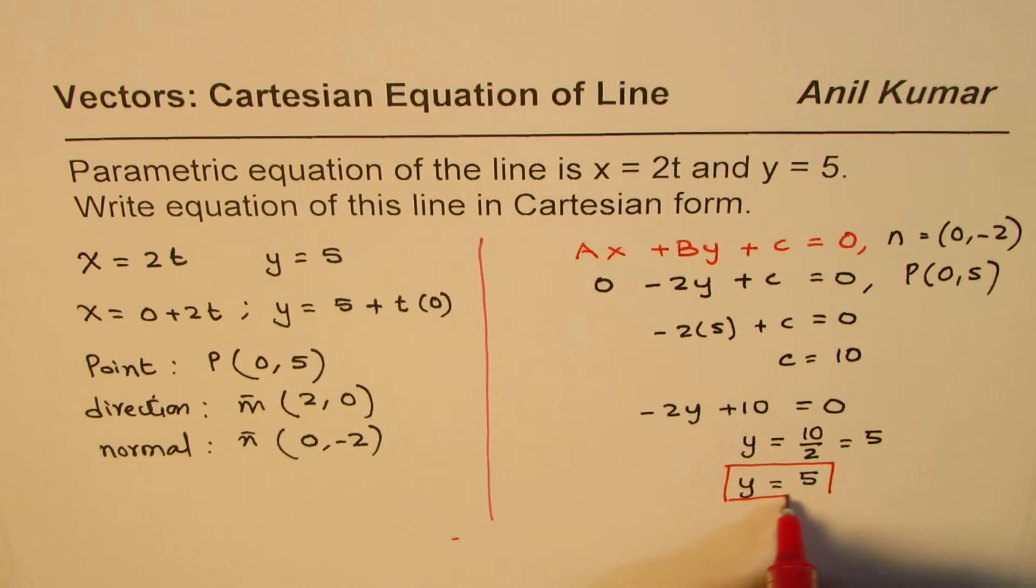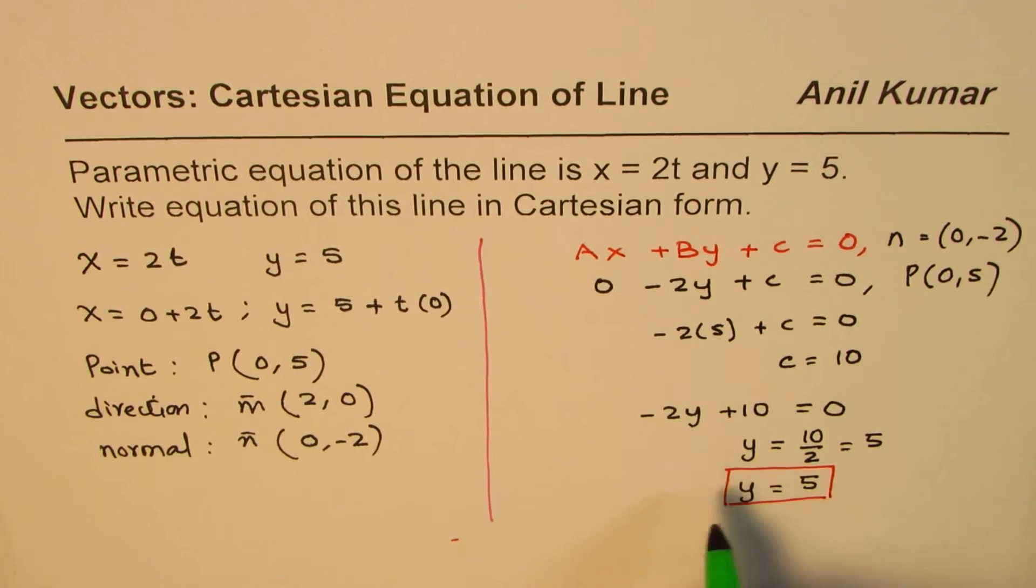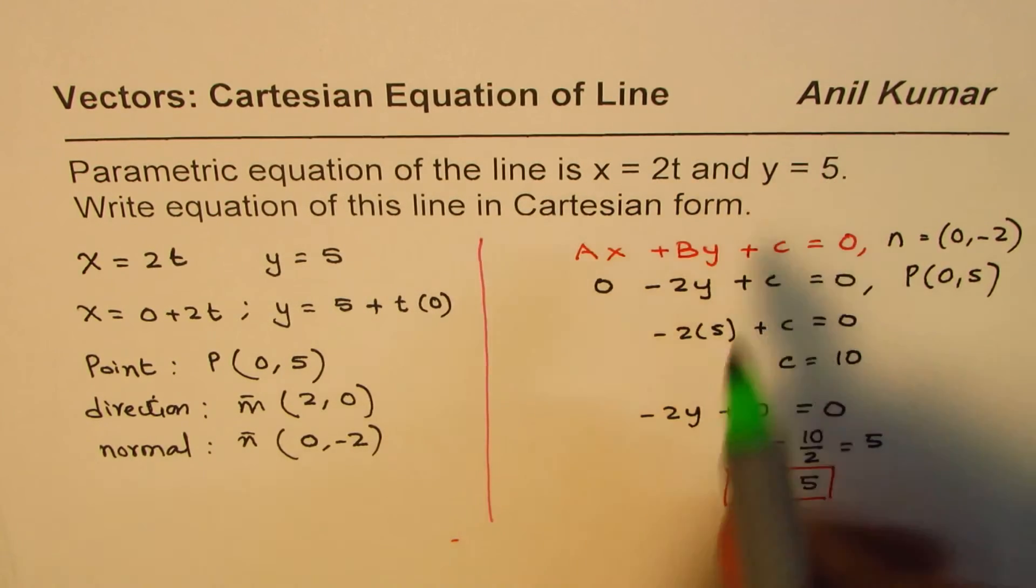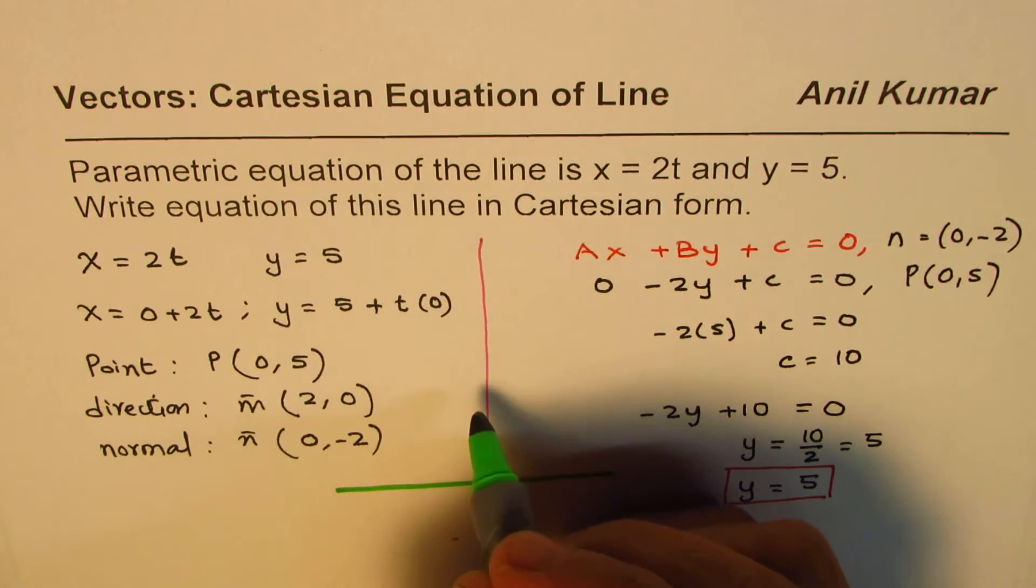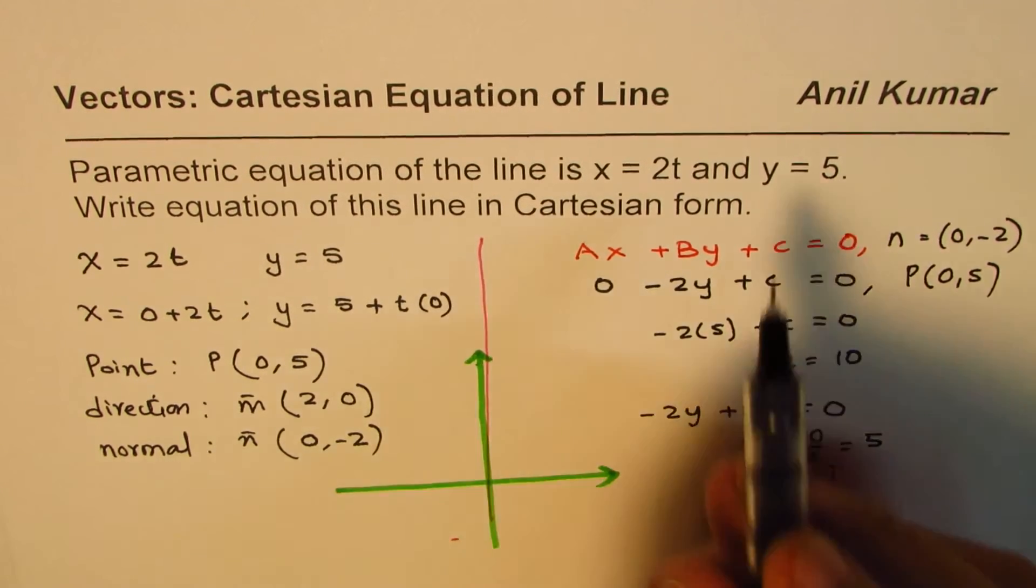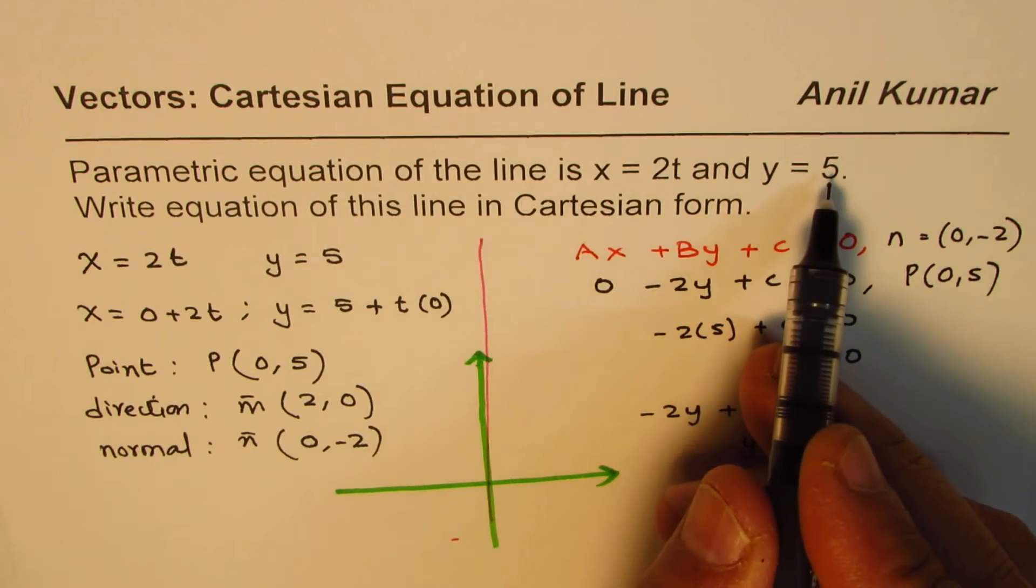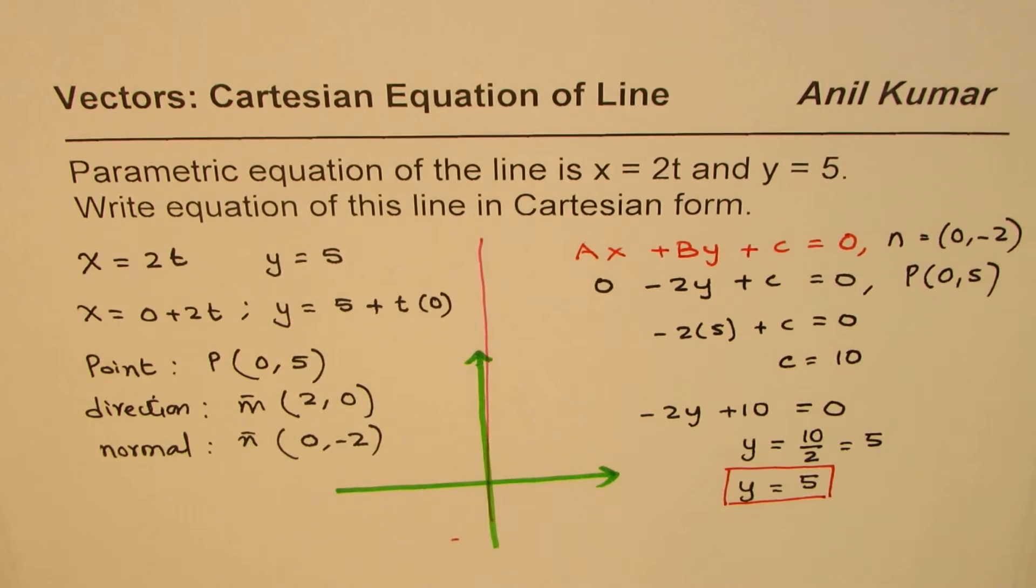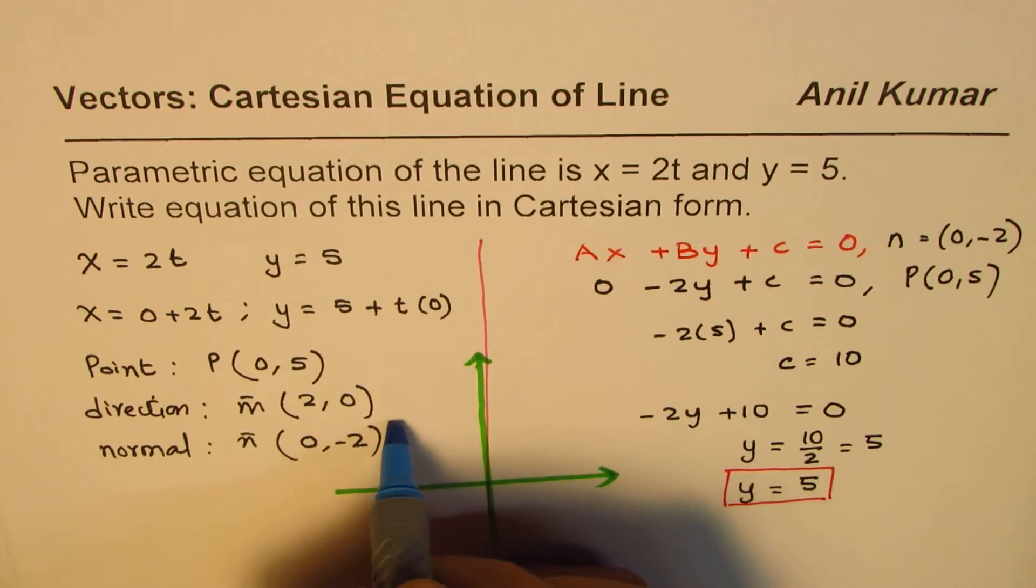So we actually get a line which is y equals 5, and that is indeed the correct equation. Y equals 5, as you know, is a horizontal line. Let me show you how. So let's say this is our coordinate plane. Now here, y equals 5—that means for all values of x, y is just 5. Since y is 5, the line should be a horizontal line y equals 5, kind of like this.